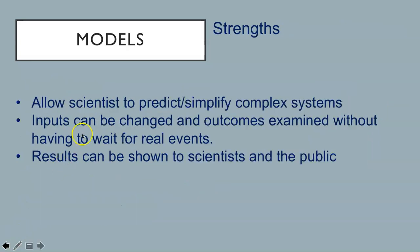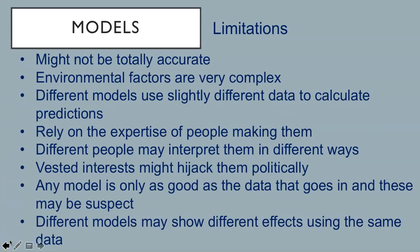So generally speaking, strengths of models include they can allow scientists to predict, simplify complex systems. The inputs can be changed and outcomes examined without having to wait for real events. The results can be shown to scientists and the public. Limitations of models are that they might not be totally accurate. Environmental factors are very complex, so models might be overly simple. Different models use slightly different data to calculate predictions. They rely on the expertise of people making them. Different people may interpret them in different ways. Vested interests might hijack them politically. Any model is only as good as the data that goes in, and these may be suspect. Different models may show different effects using the same data.